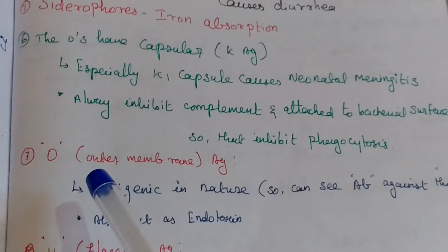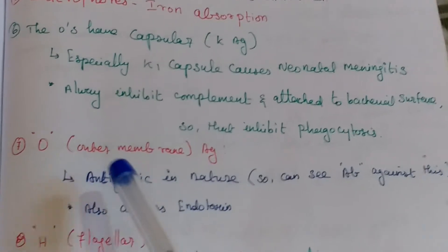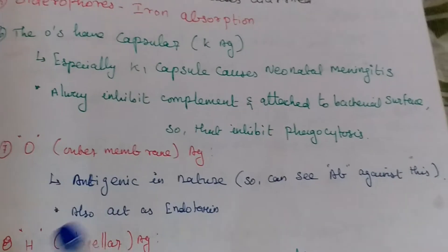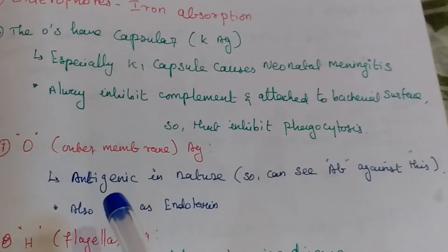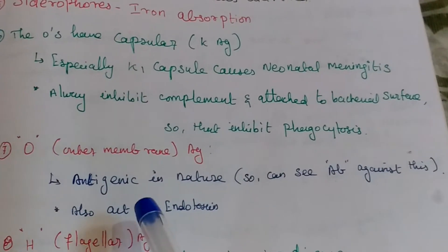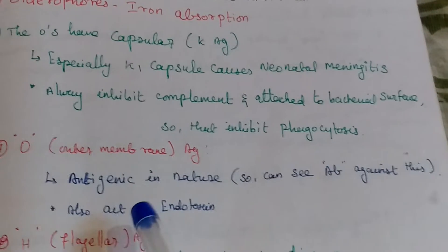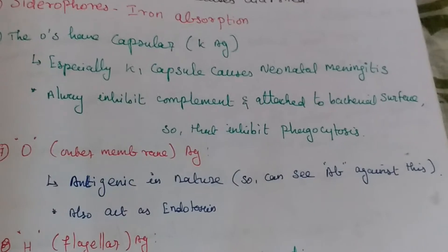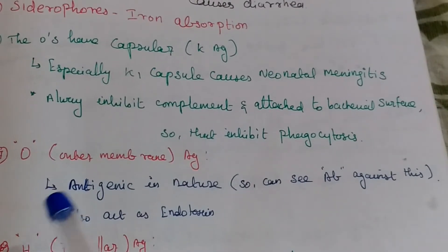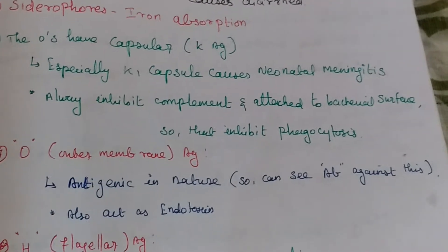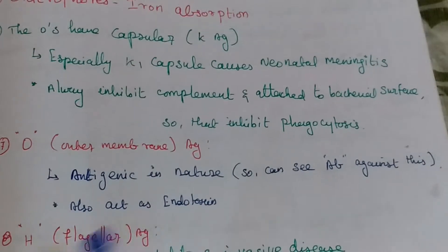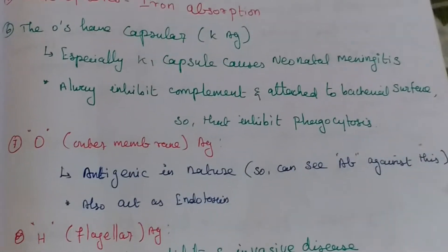The second antigen is the O antigen — the outer membrane antigen. It is antigenic in nature, so we can see antibody produced against this antigen. It acts as an endotoxin.